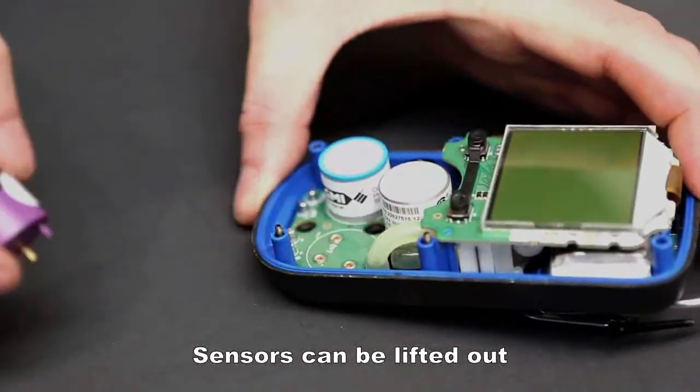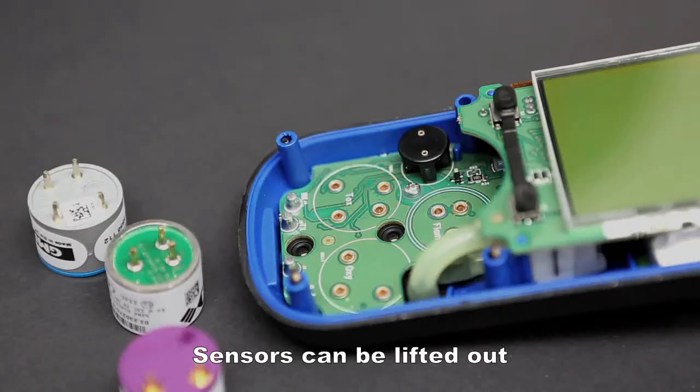In reality, you would only remove the sensor that was showing a fault. Replace the expired sensor.